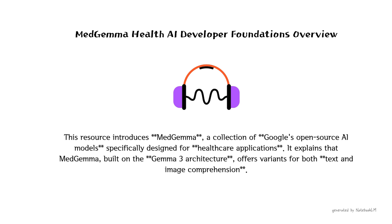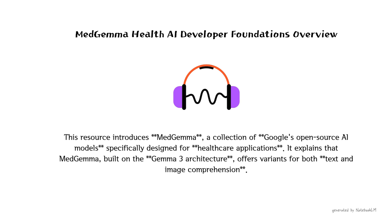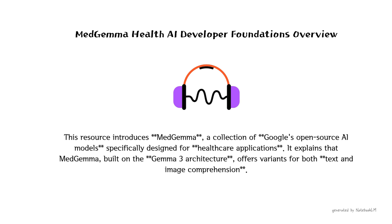They mentioned two main versions. There's a 4 billion parameter model — that's the multimodal one, meaning text and images. And then there's a much larger 27 billion parameter model that's purely text-focused. Both are built on Gemma 3, Google's latest architecture, which is pretty exciting in itself.